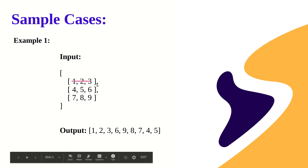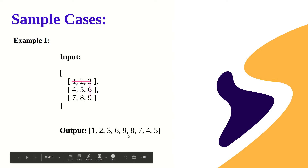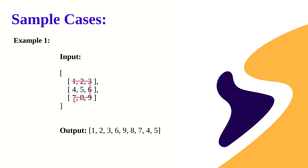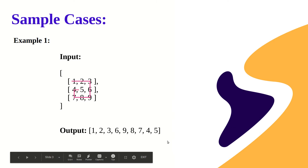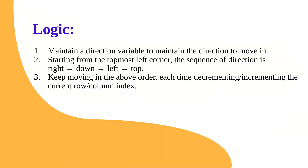First we move right, so one, two, three gets printed. Then we move down, so six, nine get printed. Then we move left, so eight, seven gets printed. Finally we move up, so four, five gets printed. This is how spiral order traversal of a matrix is defined: right, then down, then left, then up, and so forth until all matrix elements are traversed.